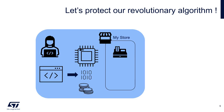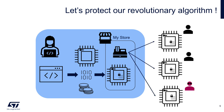Now, our innovative company will use this new mechanism. At production level, when the code executes for the first time, it could use the pre-provisioned key to encrypt any valuable asset in the device. Then, on the field, the firmware could use the embedded key to decrypt those assets, or it could also encrypt some other data if needed.